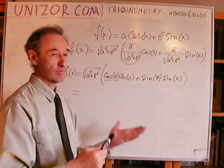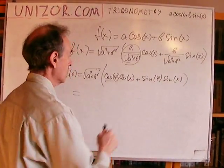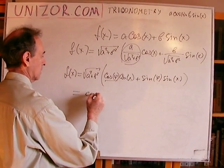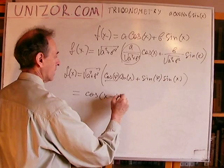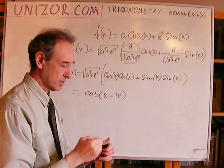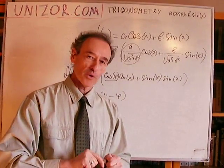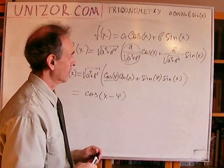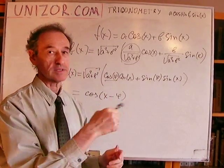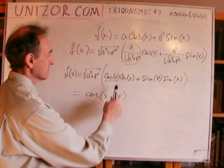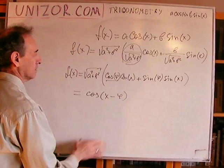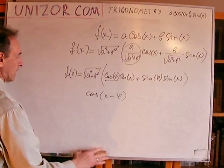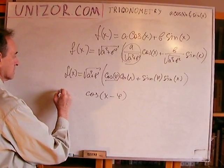Now, and this is very important now. This is the last step. This is a cosine of (x - φ). If you remember the formula, if you don't, go to the corresponding lecture in this course. It's in the same topic of sum of two angles. So, this is the formula for cosine and sine.